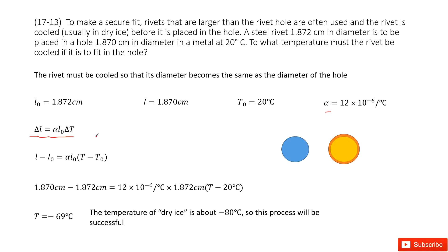And also for the rivet, the temperature change is the final temperature minus initial temperature. Initial temperature is T0. So this function can be written as this one. Now we input known quantities. You can see L, L0 is given, alpha is given, L0 is given, T0 is given.